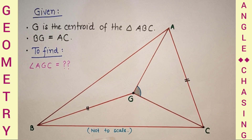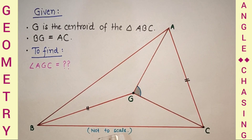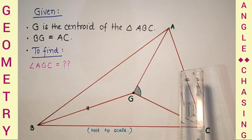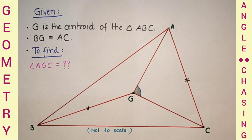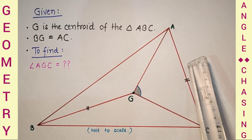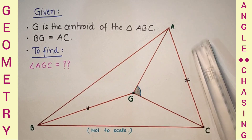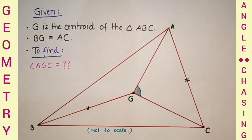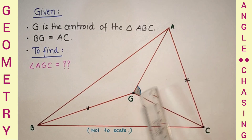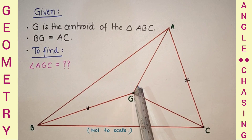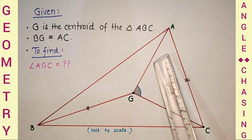The main thing is how to start this question. Since G is the centroid of triangle ABC, it is the intersection point of the medians. If we extend AG, it will pass through the midpoint of side BC, and if we extend BG, it will pass through the midpoint of AC. The centroid divides each median from vertex to base in the ratio 2:1.